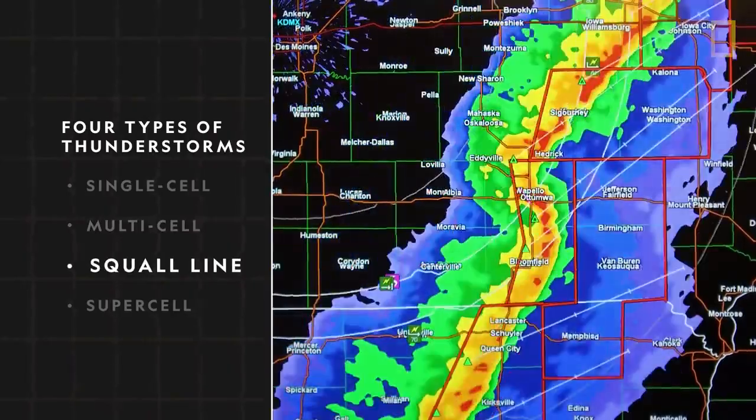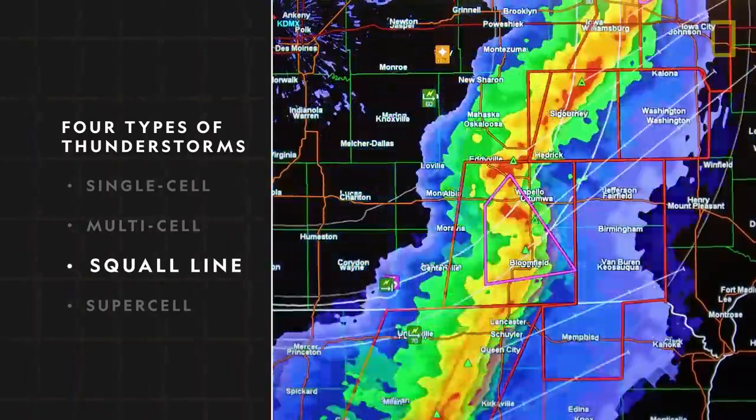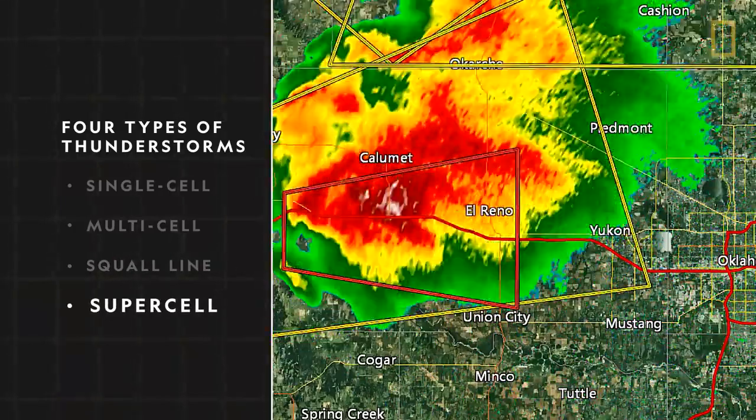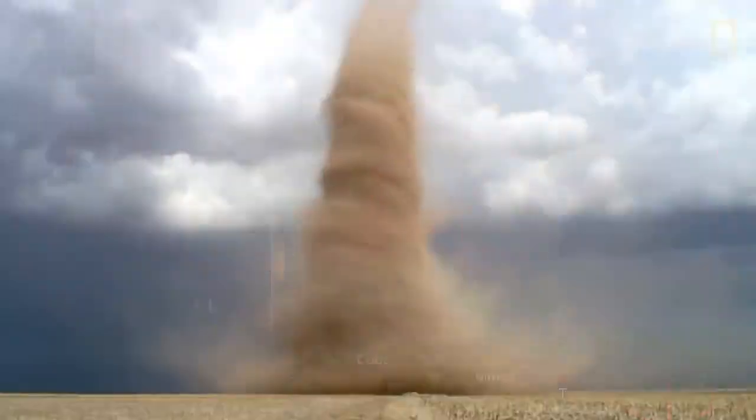Squall line, a collection of storms that can form a line hundreds of miles long. And supercells, the most intense kind of storm capable of producing tornadoes.